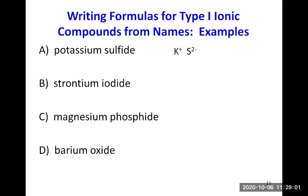You always write the positive ion first and then the negative ion. Then you can do the crisscross trick: the two from the charge on the sulfide becomes a subscript for potassium, and the one from the charge of potassium becomes a subscript for sulfur — but the one is implied and we don't write it. So the formula is K₂S. You need two potassium ions to get two positive charges in total to cancel the two negative charges from the sulfide ion.